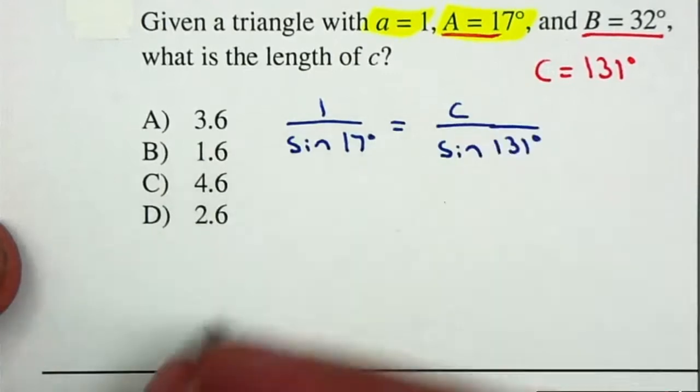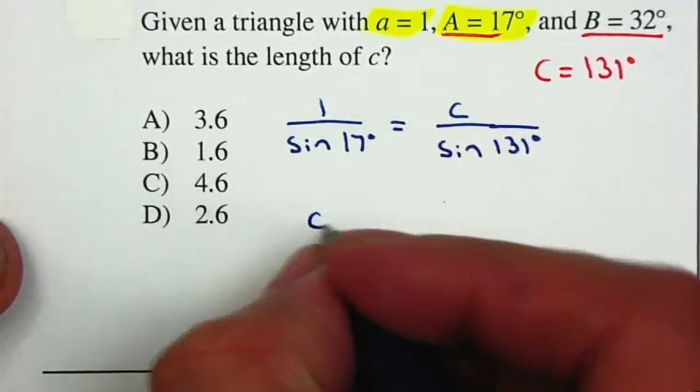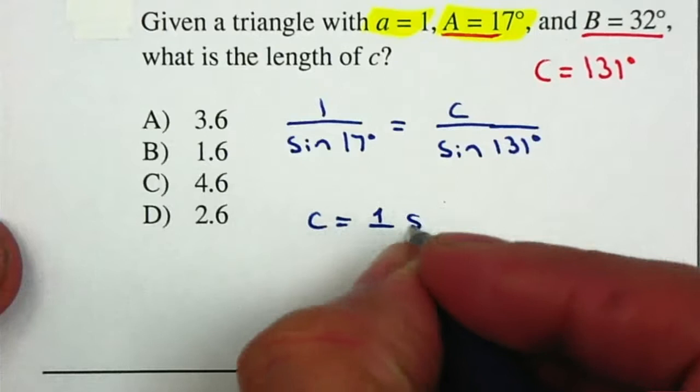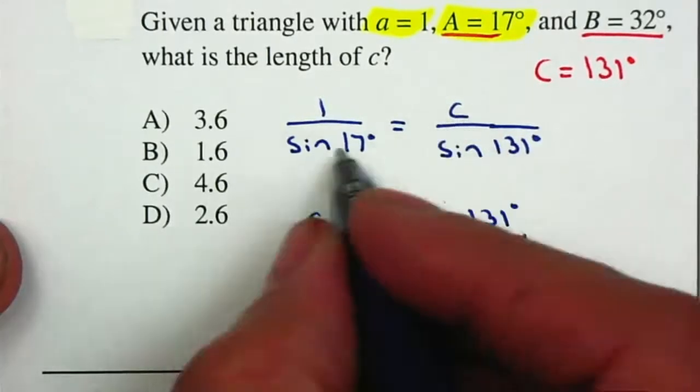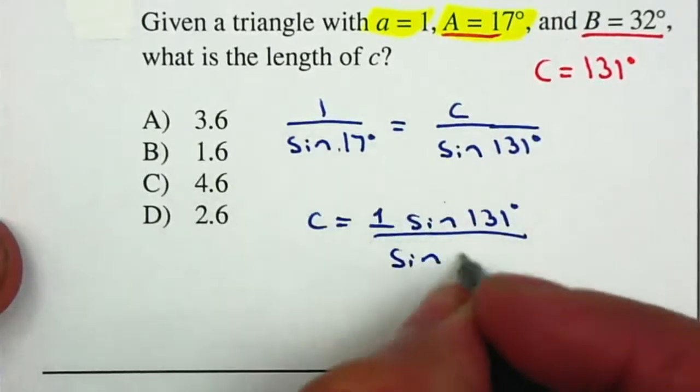And now I'm going to cross multiply. I'm going to find the value of c: 1 multiplied by the sine of 131 degrees, divided by the sine of 17 degrees.